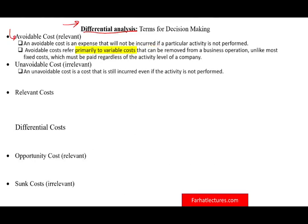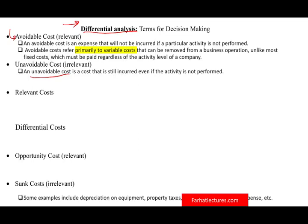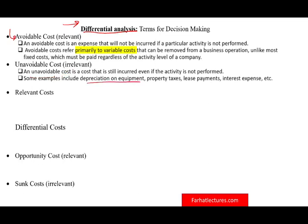Unavoidable cost is a cost still incurred even if the activity is not performed. For example, whether you produce tablets or laptops or not, you have to pay the insurance on the building, janitorial services, security, and so on. Some examples include depreciation on equipment, property tax, lease payments, and interest expense. These costs are often considered fixed costs, and since they cannot be avoided, they are irrelevant.